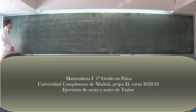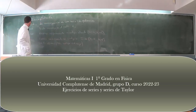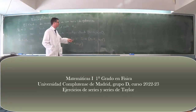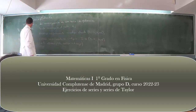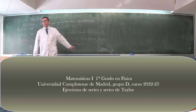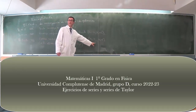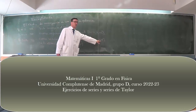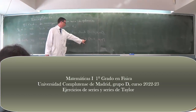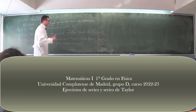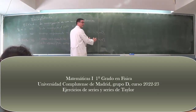Recapitulación de la clase de ayer. El radio de convergencia de una serie de potencias podía ser 0, entonces la serie solo converge en el punto x₀. Podía ser infinito, entonces converge uniformemente en cualquier intervalo alrededor de x₀. O bien podía ser finito; entonces converge uniformemente en cualquier subintervalo propio, es decir, un subintervalo estricto de (x₀-r, x₀+r). En los extremos puede converger o divergir. Sabemos que converge absolutamente en el intervalo abierto y en cualquier subintervalo converge uniformemente.